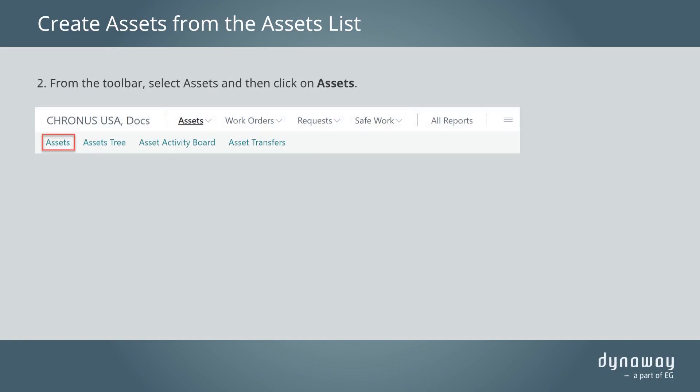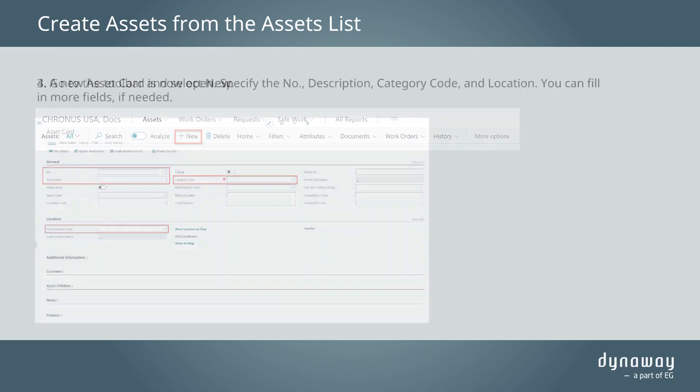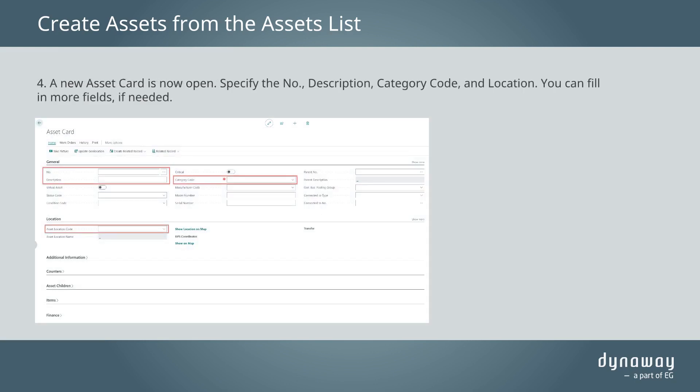From the toolbar, select Assets and then click on Assets. Go to the toolbar and select New. A new asset card is now open.